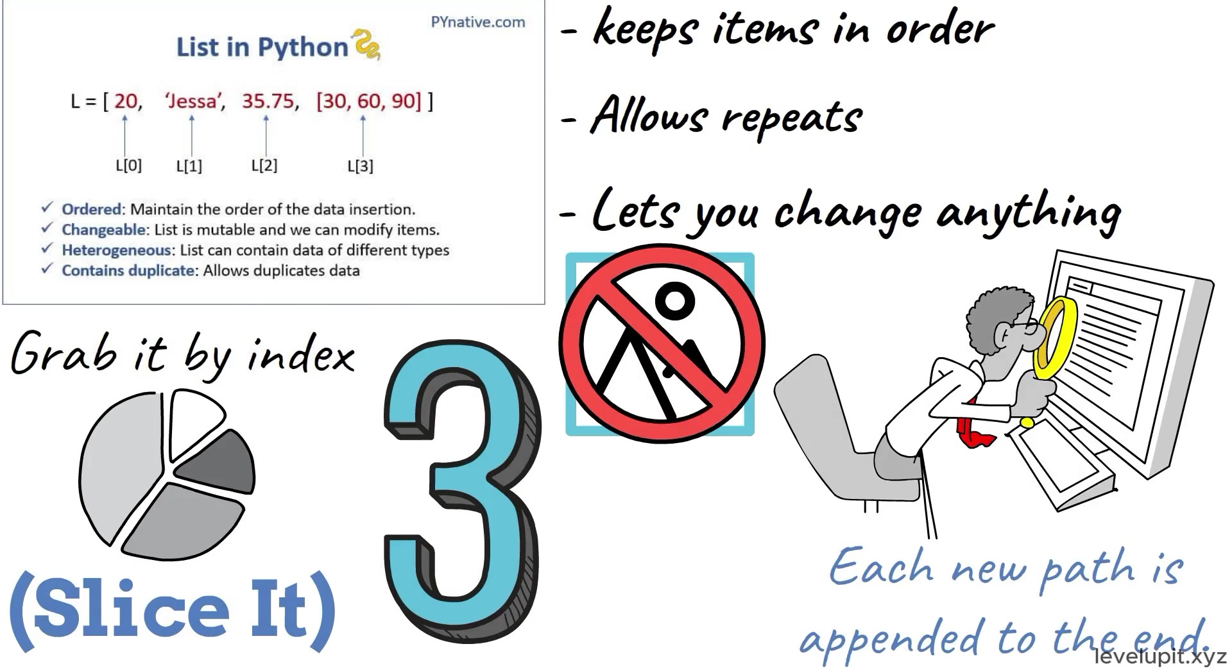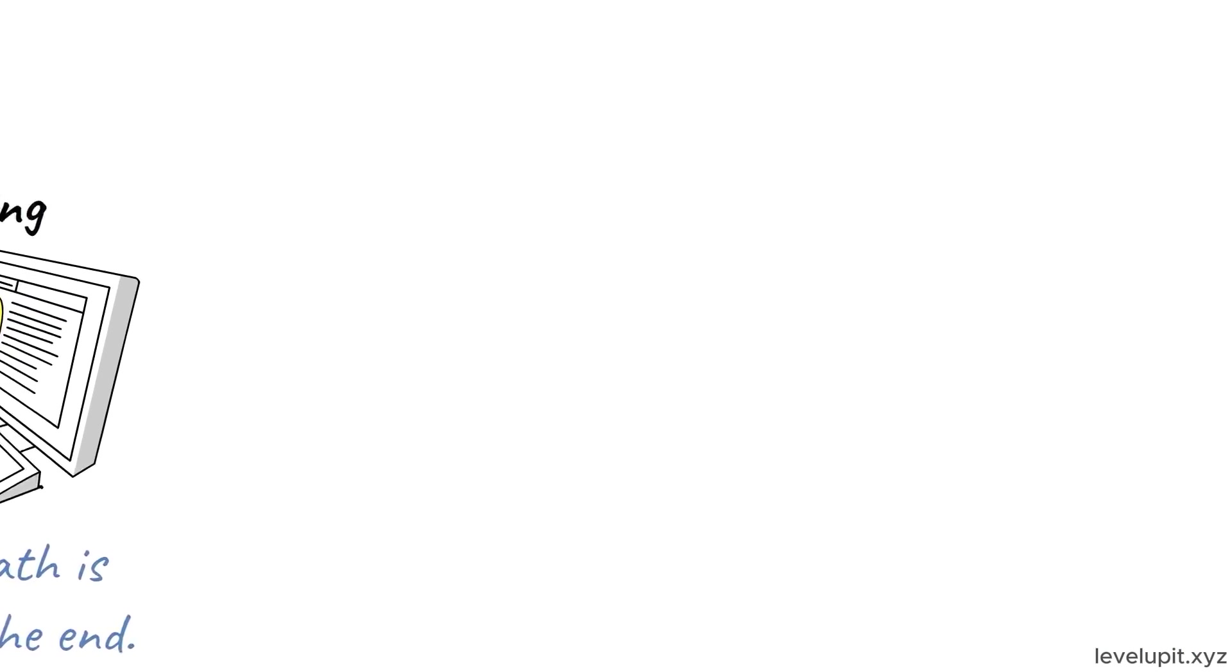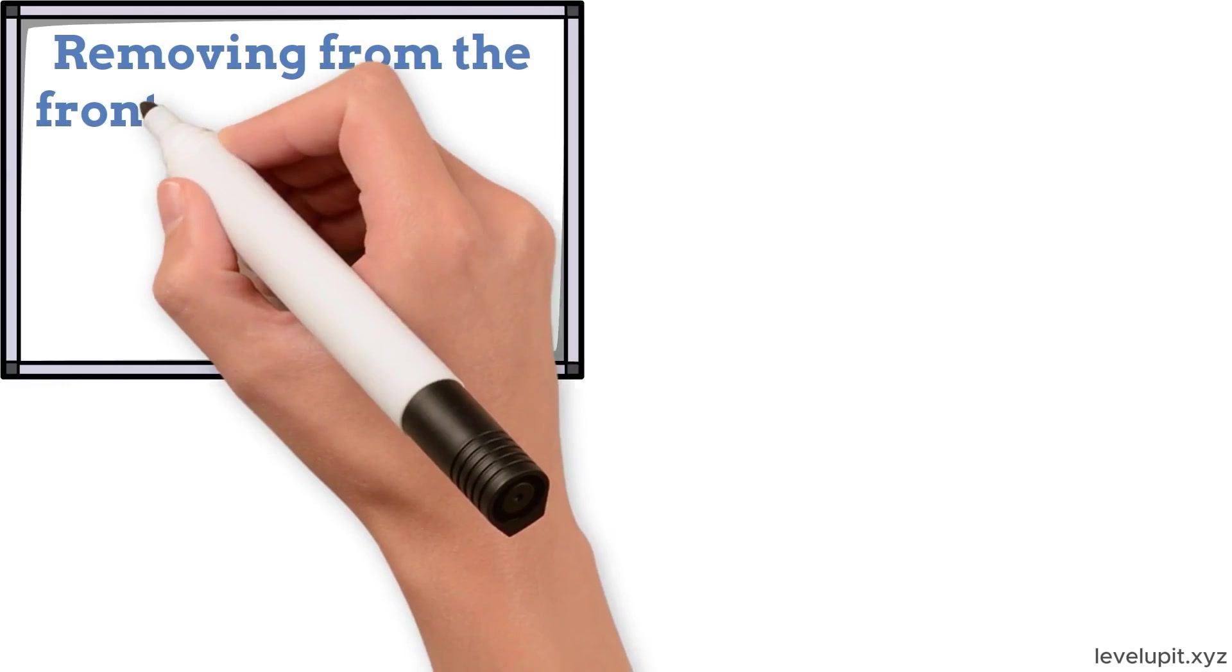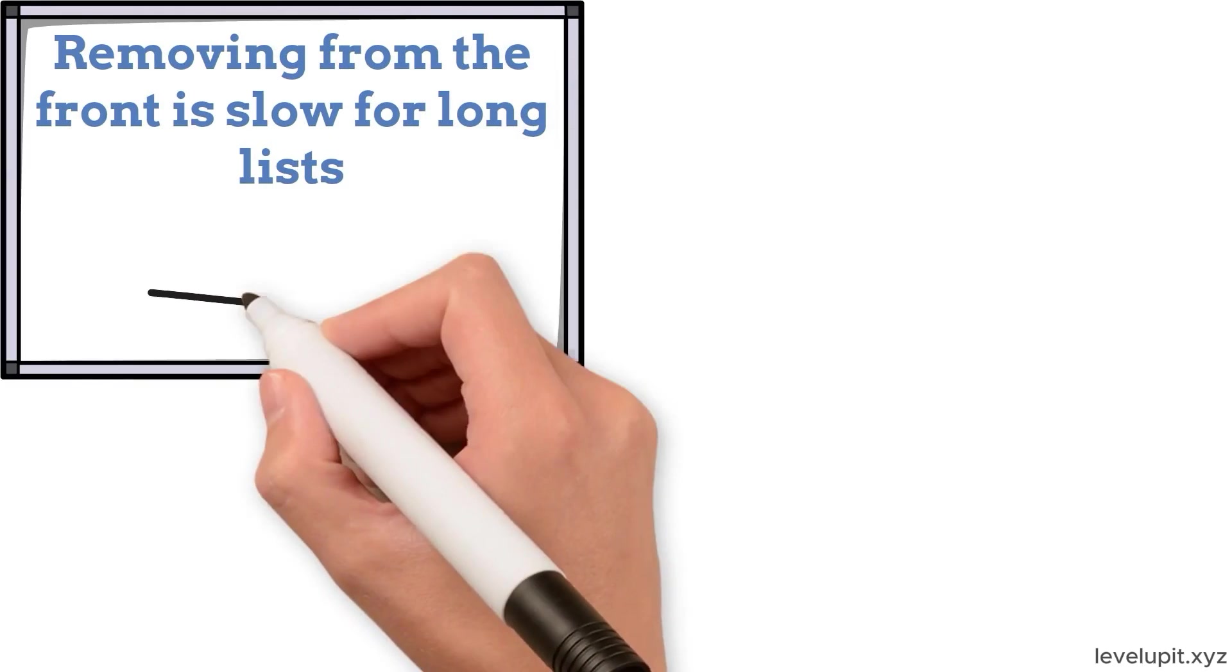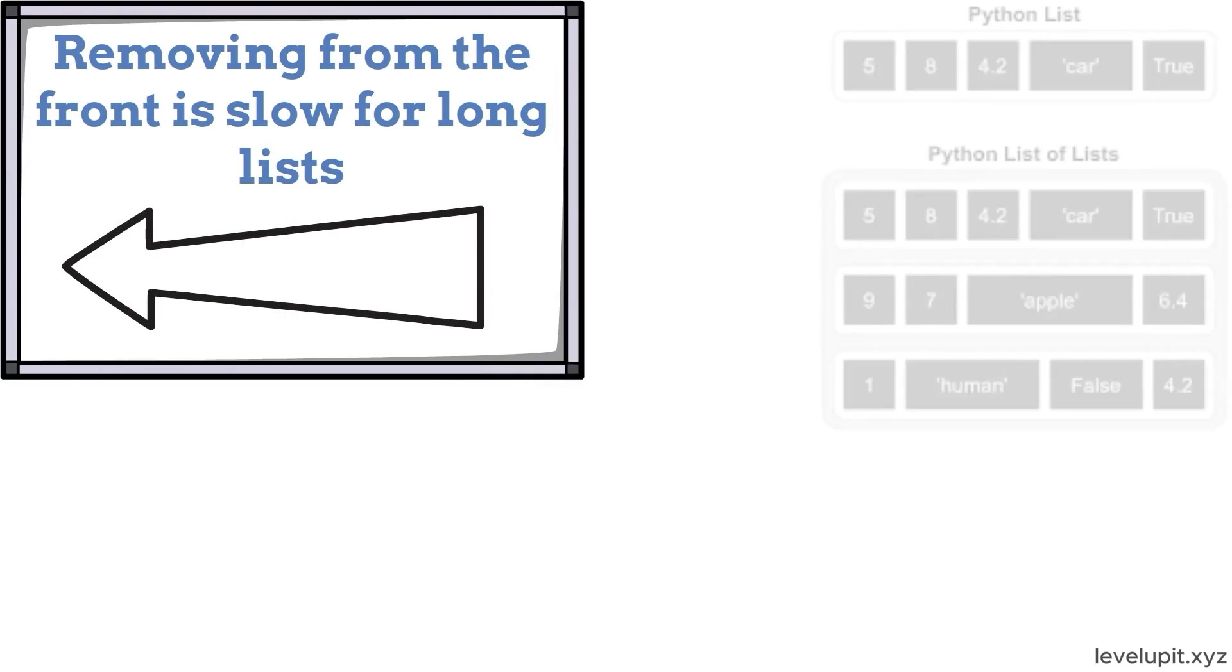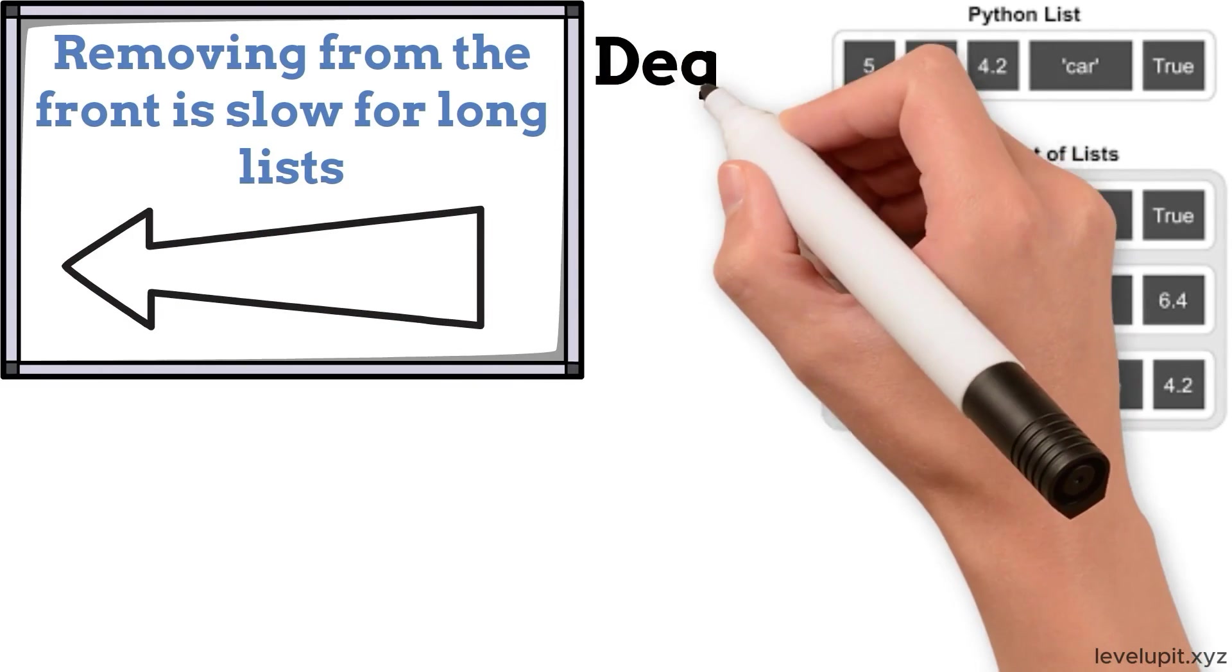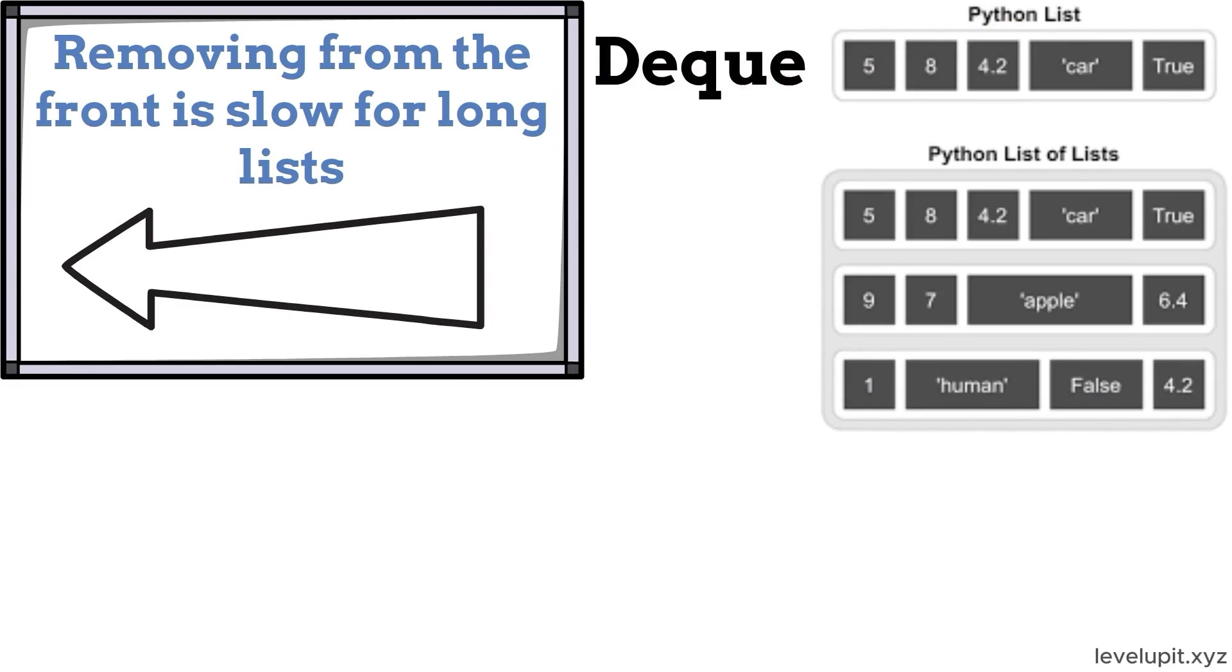This feels natural because lists are built for it. There's one common gotcha: removing from the front is slow for long lists because everything has to shift left. If the plan is to add and remove at both ends often, switch to a deque which handles both ends quickly.